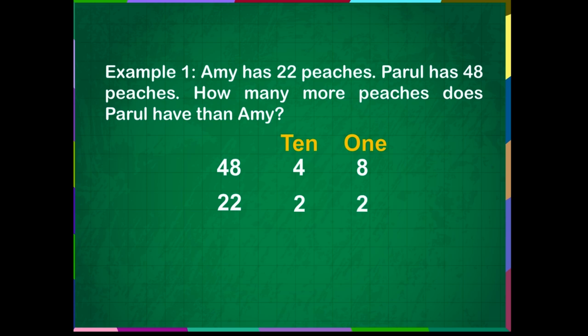First, we will subtract the ones. 8 minus 2 is equal to 6. Now, we will subtract the tens place. 4 minus 2 is equal to 2.